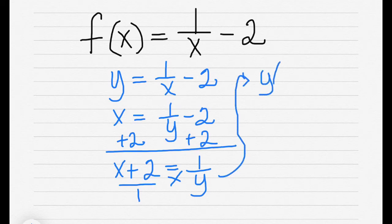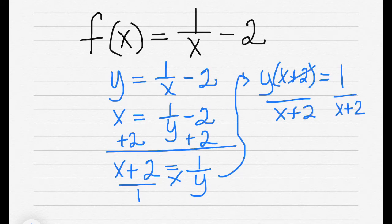y times (x + 2) = 1 times 1, which equals 1. So to get y by myself, I divide both sides by x + 2. The x + 2 cancels, and I would have y = 1/(x + 2). So the inverse is equal to 1/(x + 2).